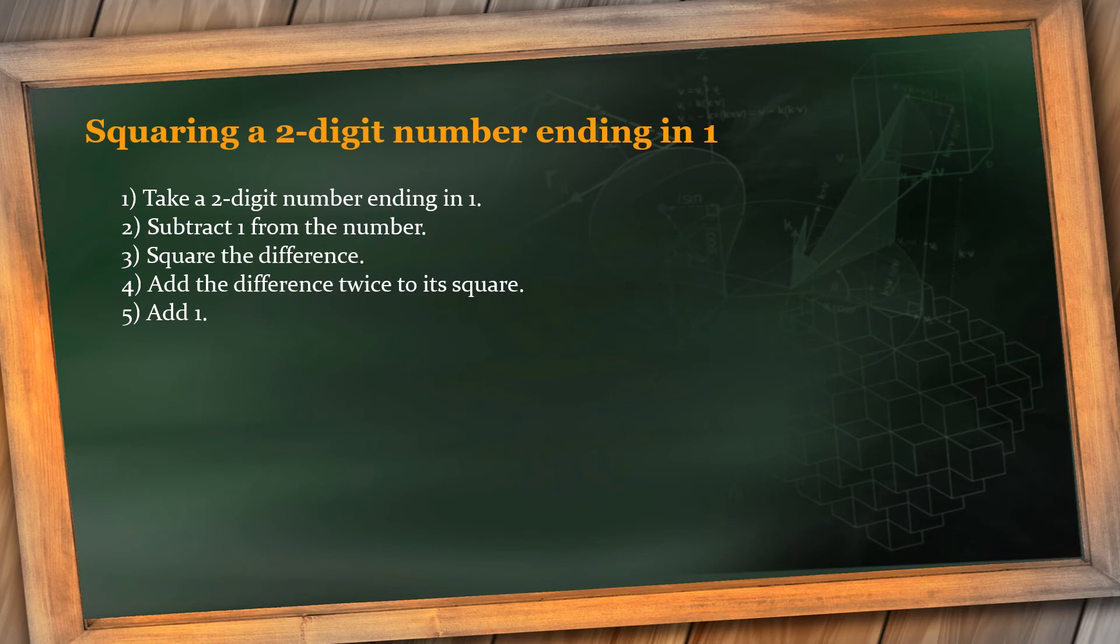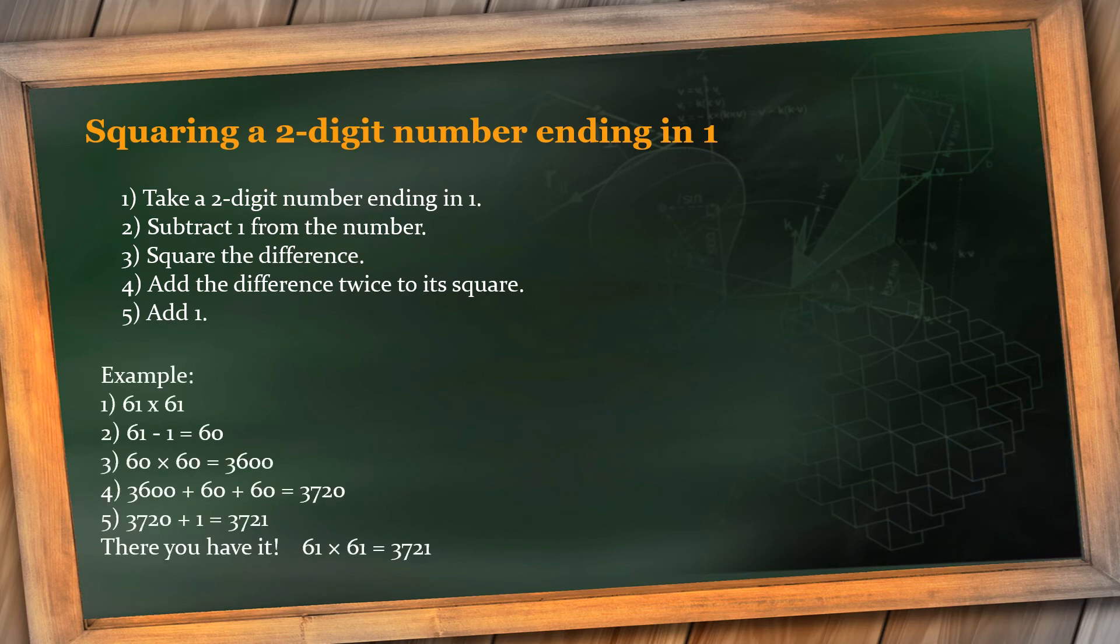Next: squaring a two-digit number ending in 1. Take a two-digit number ending in 1, subtract 1 from the number, square the difference, add the difference twice to its square, add 1. Oh my god, five, six points. What is this? Let us take the first step. We have a two-digit number for which we have to take the square, that is 61.